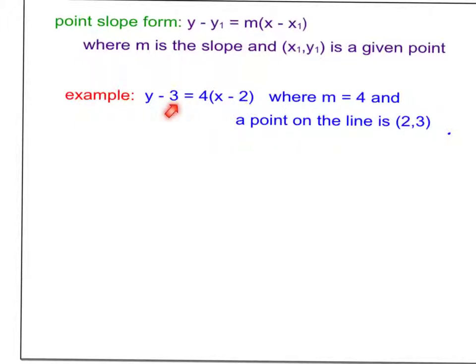If this had been y plus 3 and x plus 2, that would have meant that it passed through a negative 2, negative 3, because x minus a negative 2 is plus 2, for example.